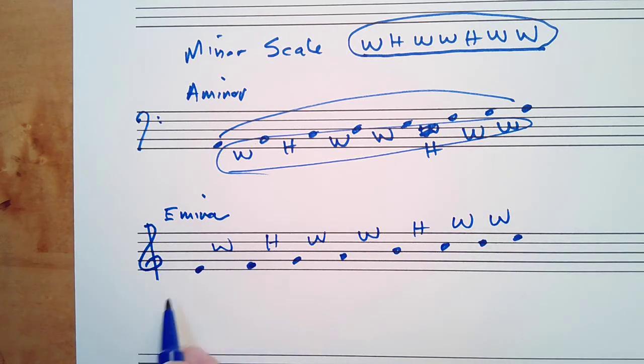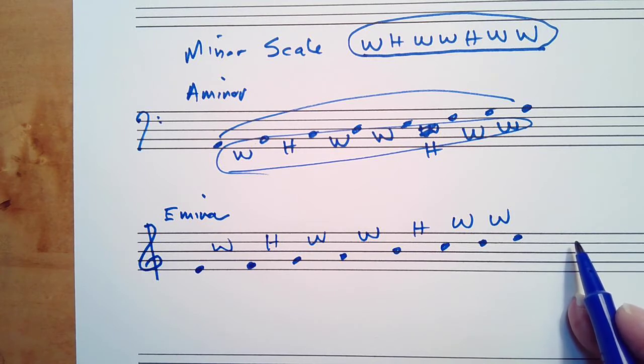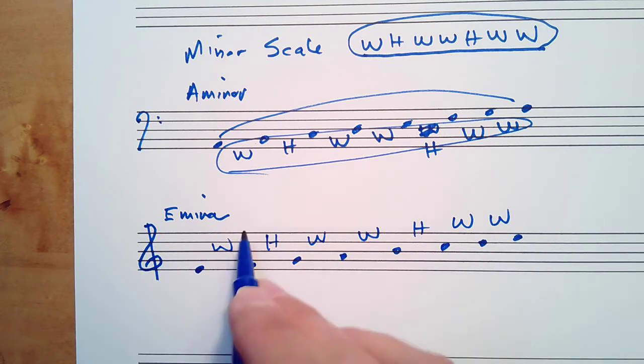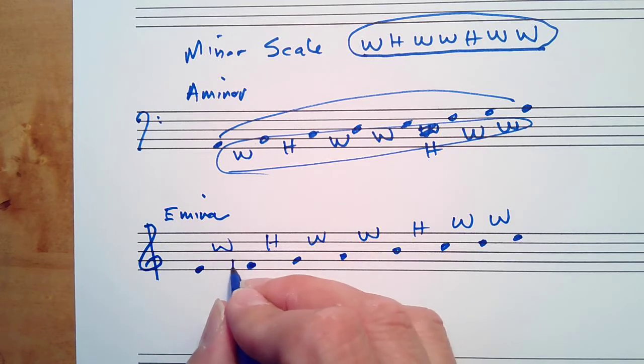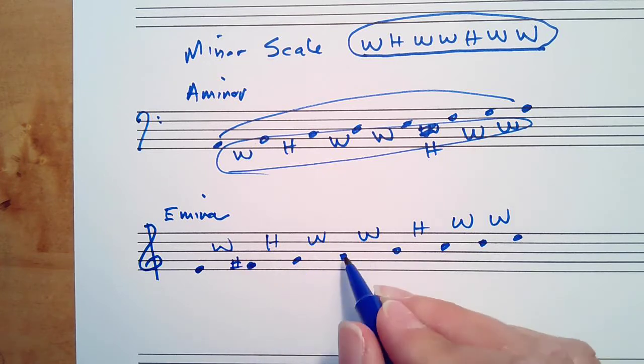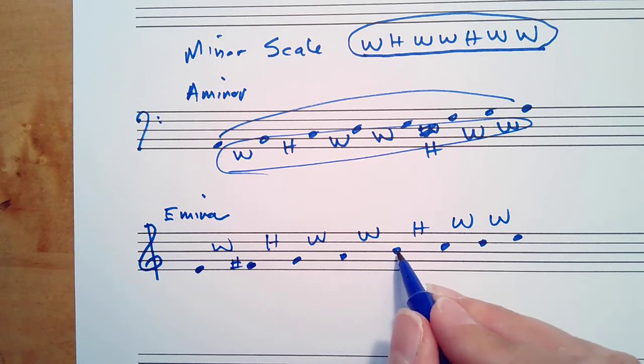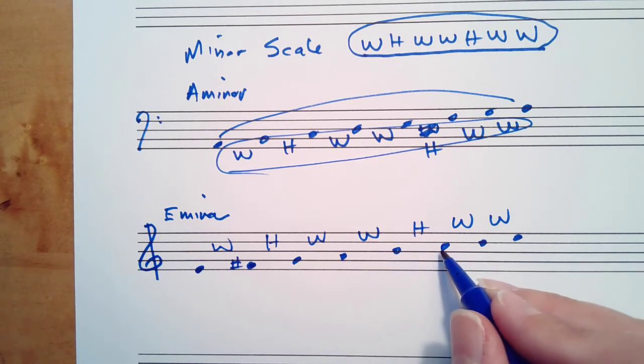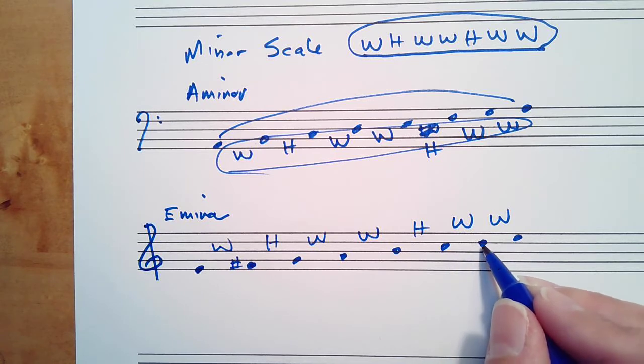And now we add accidentals to make the scale conform to the pattern. So E to F right now is a half step. Needs to be a whole step, so we need F sharp. Half step up from F sharp is G. Whole step up is A. Whole step up is B. Half step up is C. Whole step up is D. Whole step up is E. So this one is done.